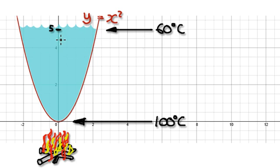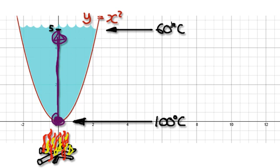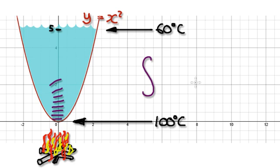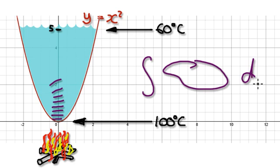To define the average temperature of this, bear in mind that there's a temperature gradient. From here to here it is 40 degrees. We are moving along the y-axis, so we're going to work in terms of dy.